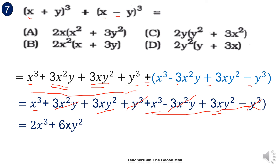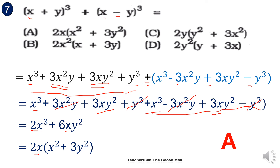I'll factor using the greatest common factor, which is 2x. Factoring out 2x gives 2x times (x squared plus 3y squared), because 2x cubed divided by 2x equals x squared, and 6xy squared divided by 2x equals 3y squared. The final answer is letter A.